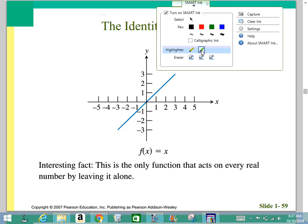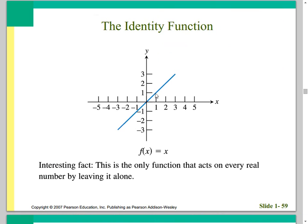They call it the identity function because when x equals 1, y equals 1. When x equals 2, y equals 2. That's the identity function — it's the only function that acts on every real number by leaving it alone. Some functions are bounded, but this one literally covers every single number in both the x and y directions, from negative infinity to positive infinity.